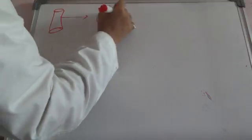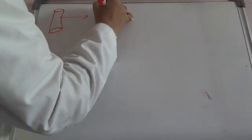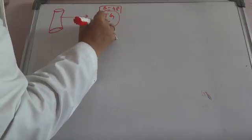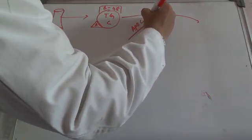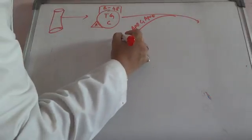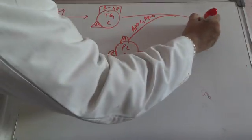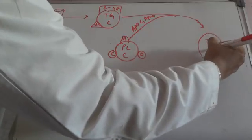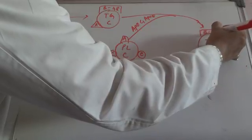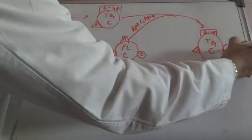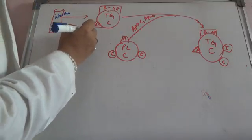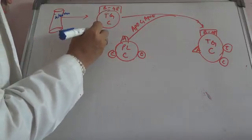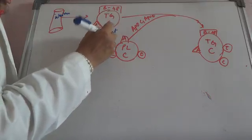In summary: the intestine gives us the nascent chylomicron which has triglycerol, cholesterol, ApoB48, and ApoA. This receives ApoC and ApoE from HDL — which has phospholipids, cholesterol, ApoA, ApoC, and ApoE — forming the full chylomicron with triglycerol, cholesterol, ApoB48, ApoA, ApoC, and ApoE.